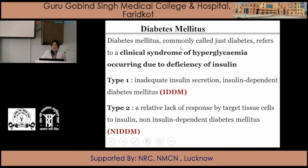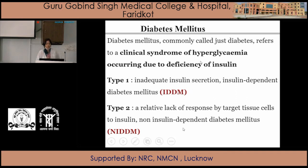Diabetes mellitus, commonly called just diabetes, refers to a clinical syndrome of hyperglycemia occurring due to deficiency of insulin. It has two types mainly: Type 1 diabetes is the insulin-dependent diabetes mellitus, because of inadequate insulin secretions, and Type 2 is a relative lack of response by the target tissue cells to insulin, and it is non-insulin dependent diabetes mellitus.